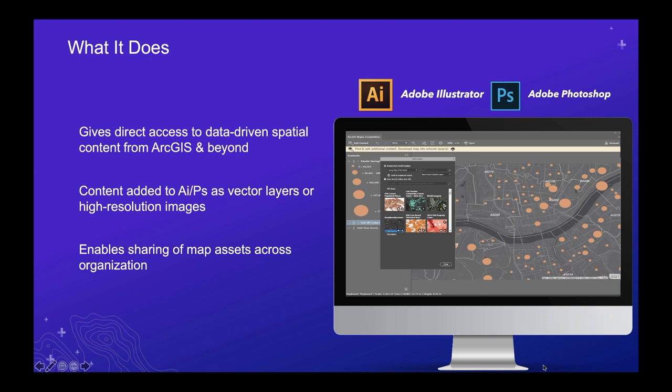Content can be added into Illustrator as vector layers or high-resolution images into Photoshop. Another key point is that the extension can enable sharing of map assets across your organization. If you're on the GIS analyst end of the spectrum, this gives you a way to share authoritative content across your organization to users who may not otherwise have access to it or even know it exists.